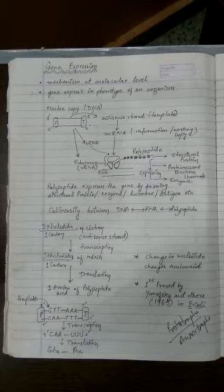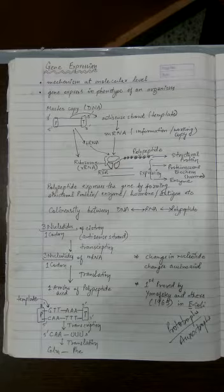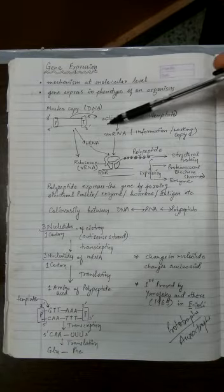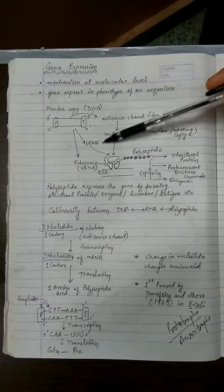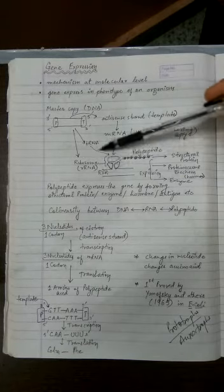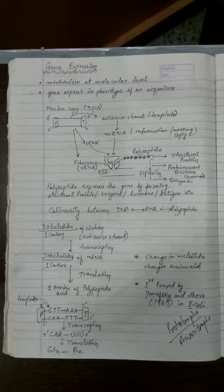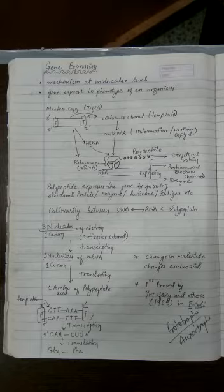We learned that genes are expressed to form proteins. Polypeptide expresses the gene by forming structural proteins, enzymes, hormones, or antigens. Whether it is the formation of messenger RNA, tRNA, or rRNA, all of them are involved in gene expression, because if any of these RNAs are missing, then the process of gene expression or polypeptide formation would not be possible.